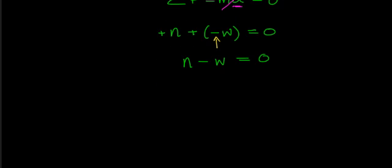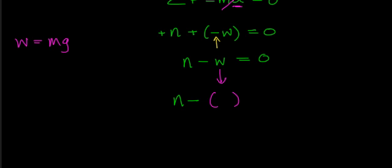We know the magnitude of the weight force: it equals the mass of the object times the gravitational acceleration. So substituting into our equation, the normal force minus the weight force — having already accounted for direction — gives us normal force minus mg equals zero.